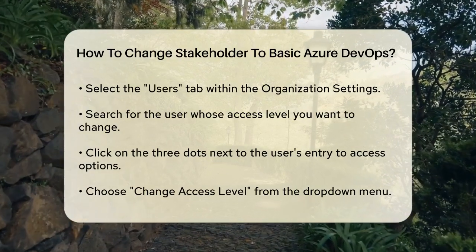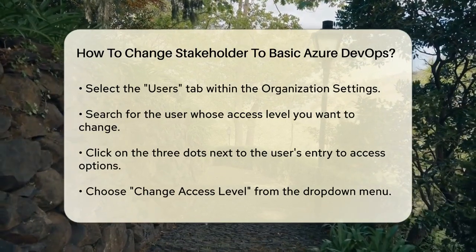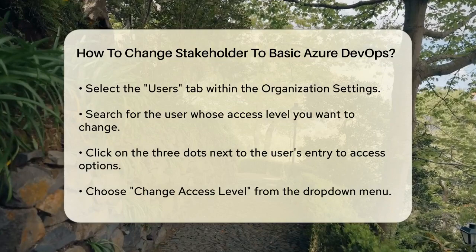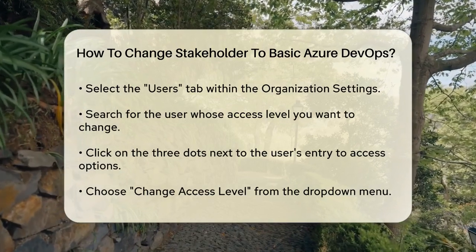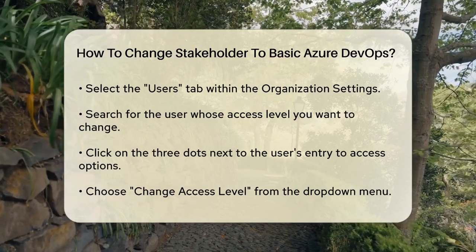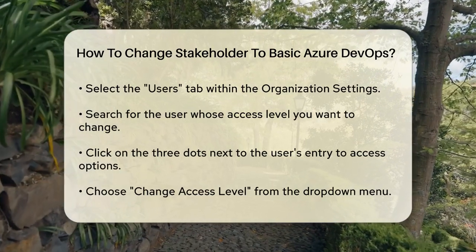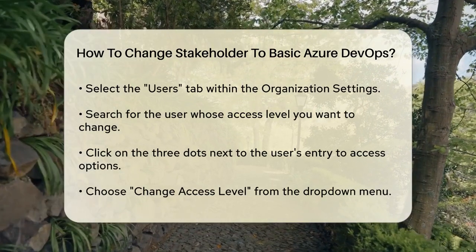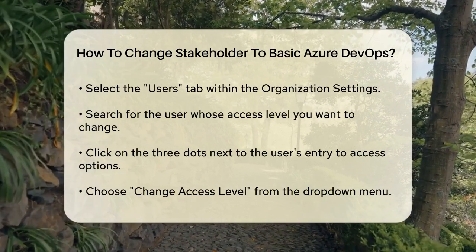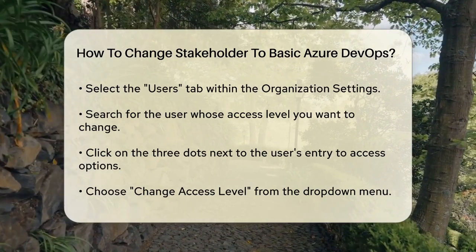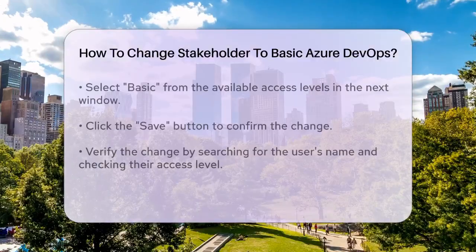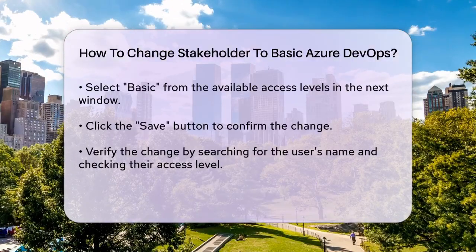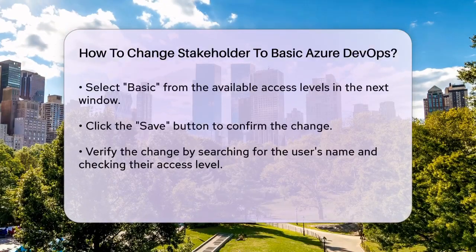In the next window, you'll see a list of available access levels. Click on Basic and then click the Save button. That's it — the user's access level will now be changed from stakeholder to basic.